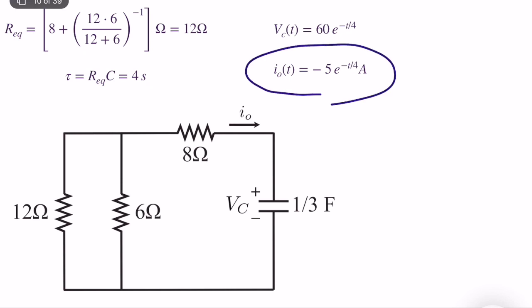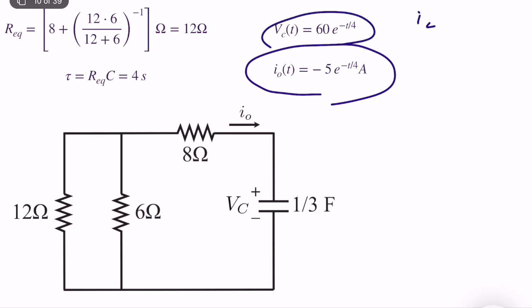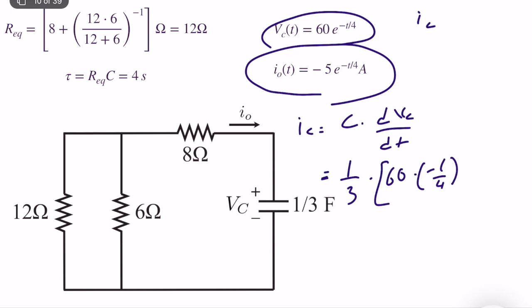I specifically labeled this current — when computing it, I treated the capacitor as a voltage source, since we know its voltage and can compute the remaining circuit variables. We know IO equals IC due to passive sign convention. Let's verify by computing IC directly from VC by taking the derivative: IC equals C times dVC/dt equals (1/3) times 60 times (−1/4) times e to the power minus t divided by 4, which equals minus 5 e to the power minus t divided by 4. This confirms IC equals IO.